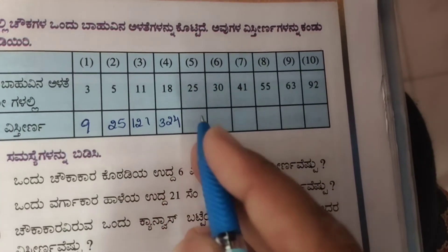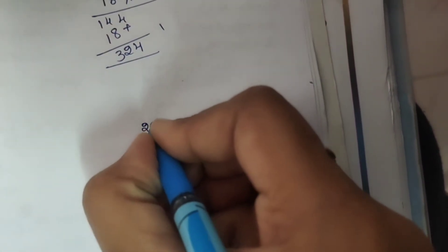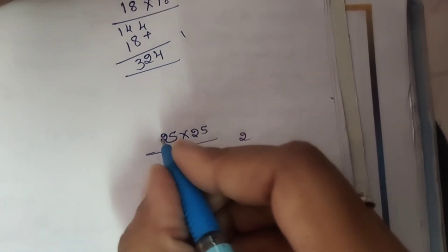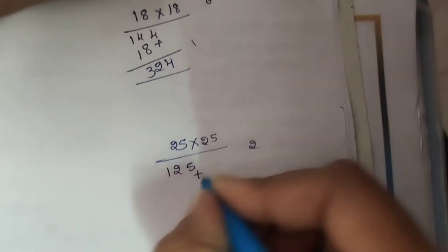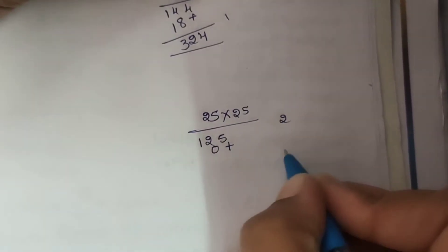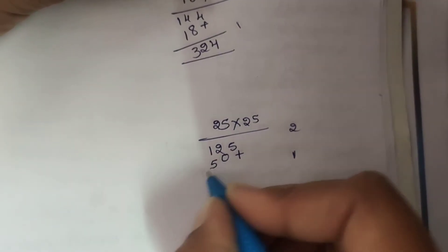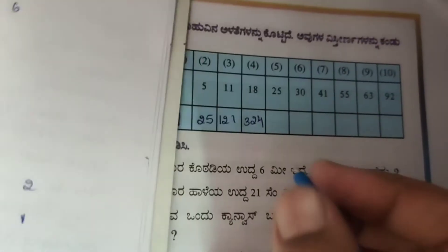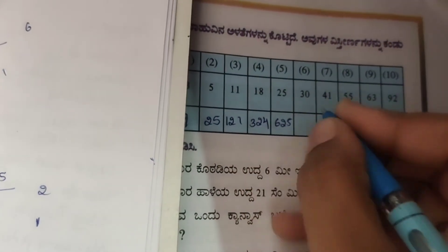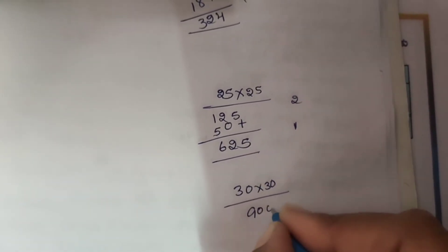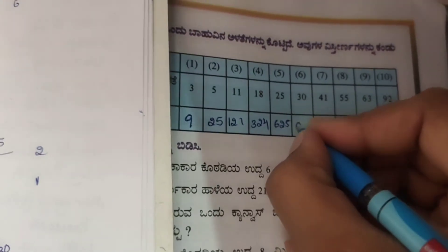For side 25: 25 into 25. 5 fives are 25, carry 2. 5 twos are 10, 10 plus 2 is 12. 2 fives are 10, carry 1. 2 twos are 4, 4 plus 1 is 5. Result: 625. For side 30: 30 into 30. 3 threes are 9, with two zeros, that is 900.